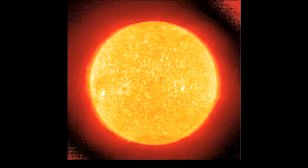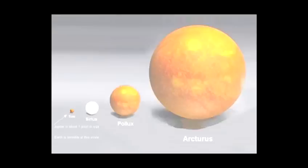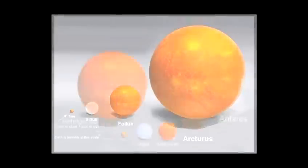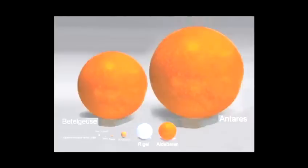The sun is a middle-aged star. It is not particularly bright and it is far from being very big. There are other stars that dwarf our sun.